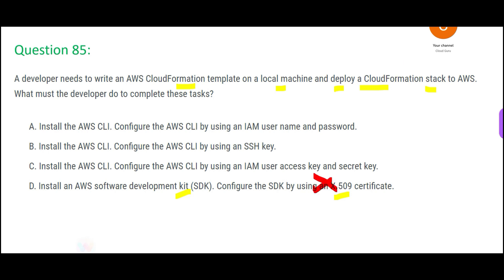Option A is wrong because it says we will configure the CLI and plug in a username and password — we should not use a password. That is not the right way of communicating across CloudFormation stacks from a local machine. What about SSH keys? SSH keys are used when you have EC2 instances and want to communicate using AWS CLI. In this case, we do not have an EC2 instance — we are talking about a CloudFormation stack.